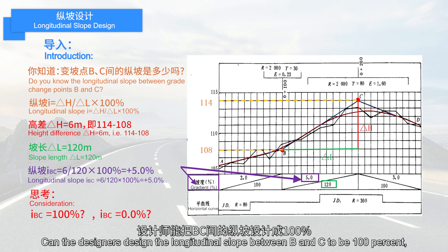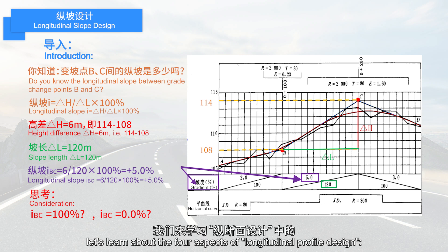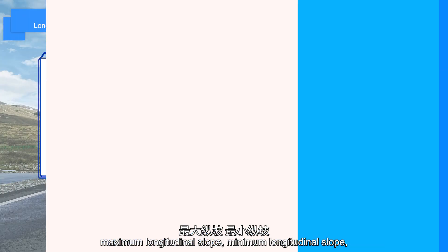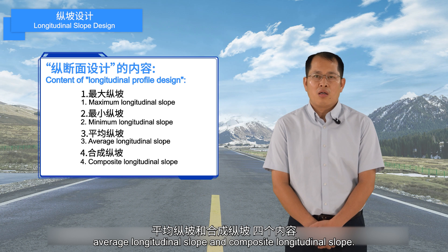Think about it — can the designers design the longitudinal slope between B and C to be 100% or flat? With this question in mind, let's learn about the four aspects of longitudinal profile design: maximum longitudinal slope, minimum longitudinal slope, average longitudinal slope, and composite longitudinal slope.